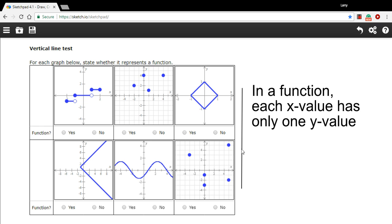If you can draw a line, a straight vertical line through the function and have it intersect the function in more than one point, then it's not a function.